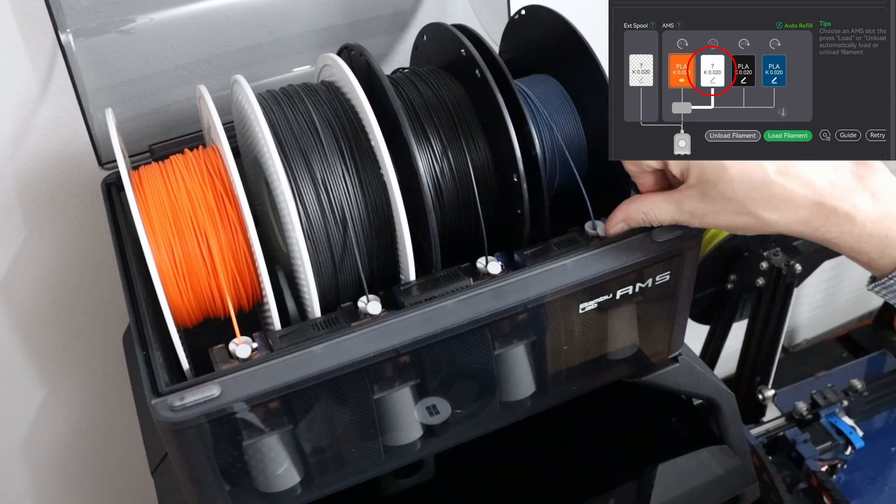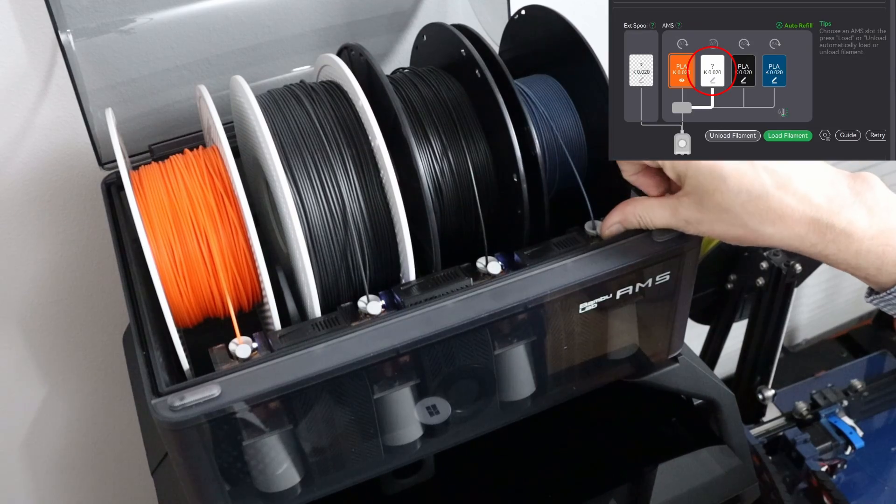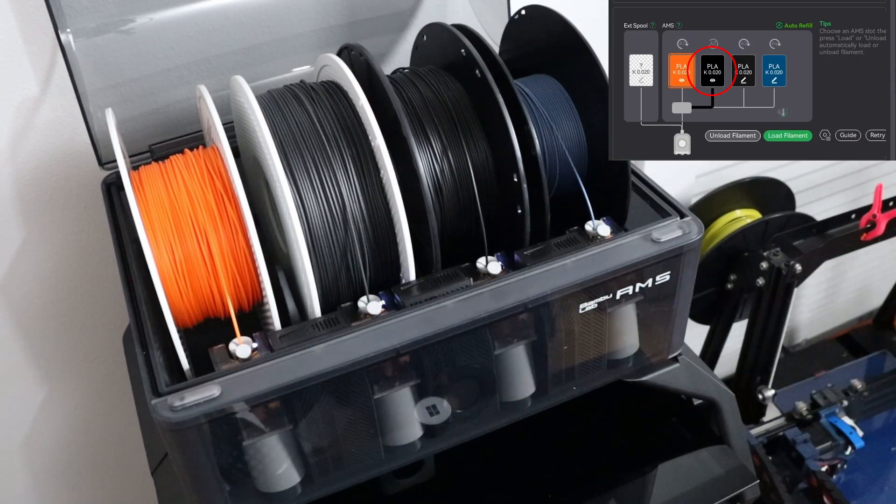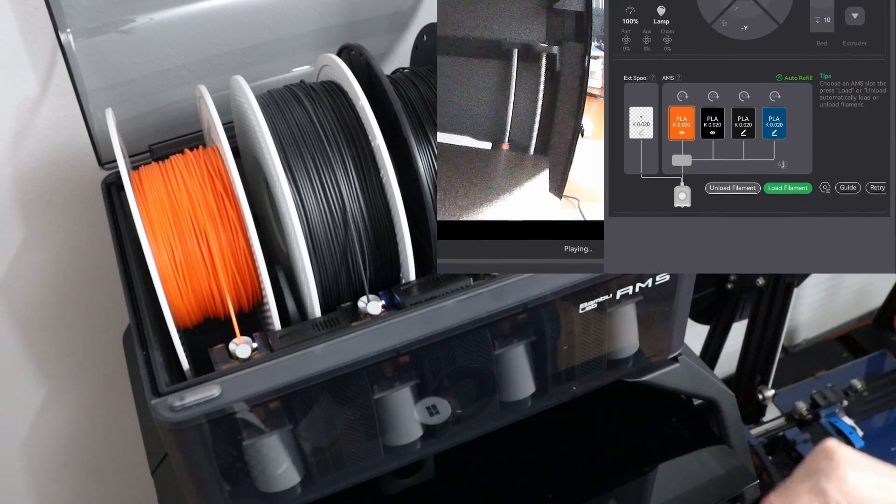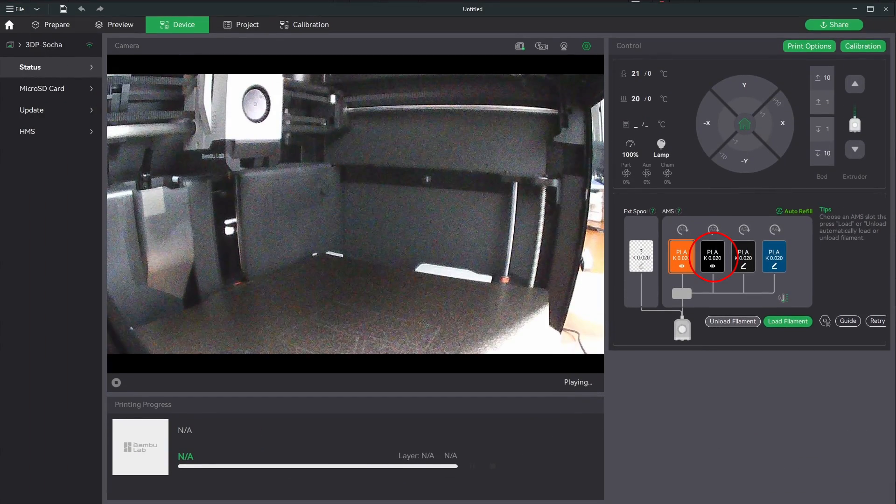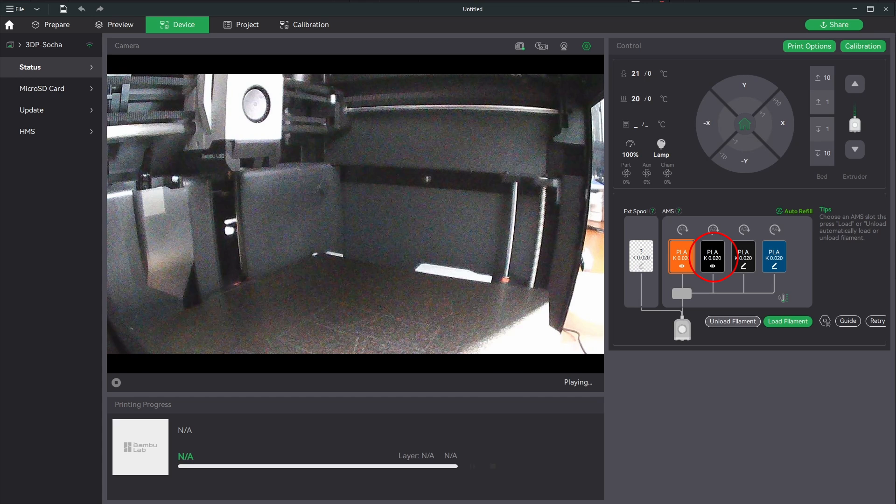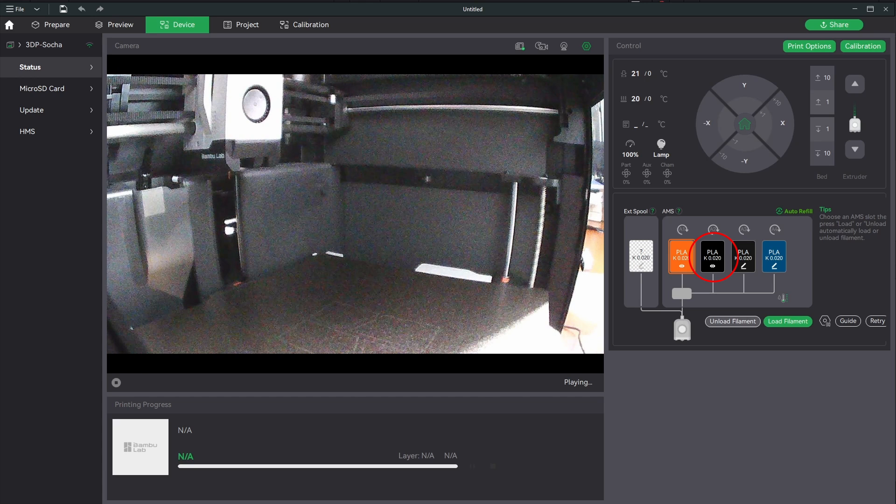And then removing the filament is just a matter of pushing on this and then pulling it out. So it's also really easy to swap in different rolls of filament. And as you can see, it filled in that it was PLA and also that it was black. So I didn't have to set anything.